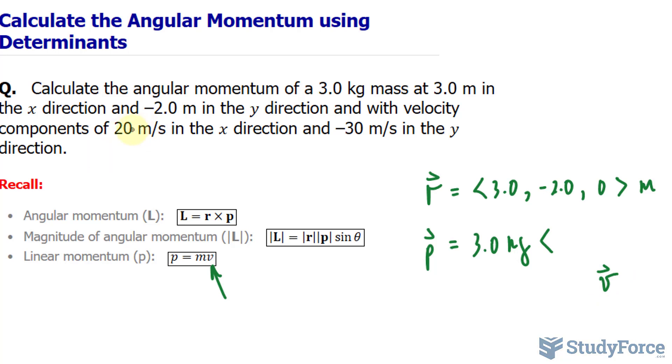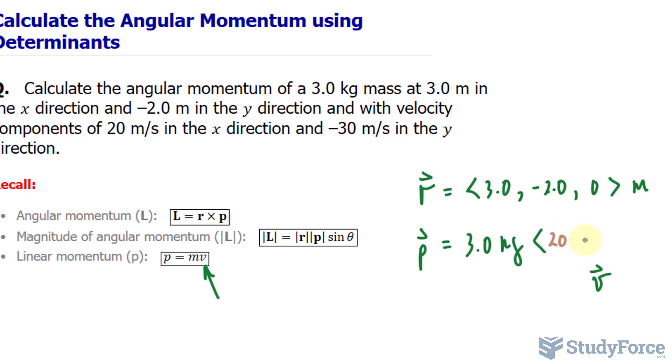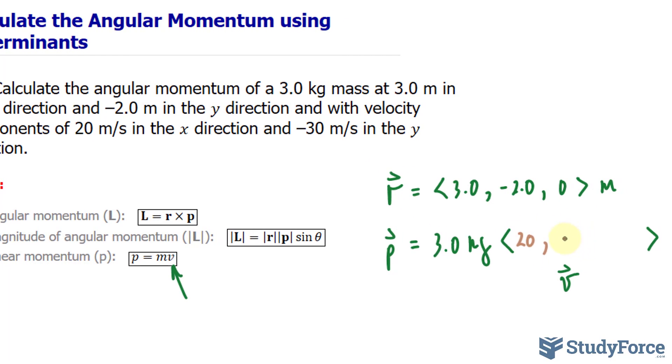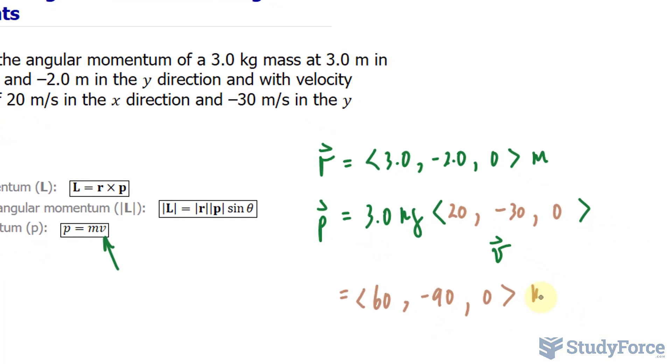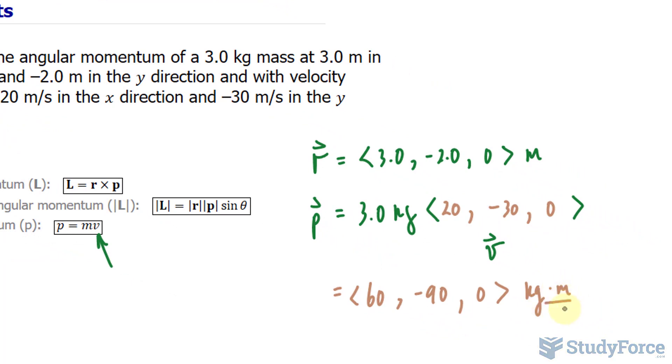The x component is 20, the y component is negative 30, and the z component is 0. Multiplying this out, where I take 3 and multiply to each component, I end up with 60, negative 90, and 0. The units for linear momentum are kilograms times meters per second.